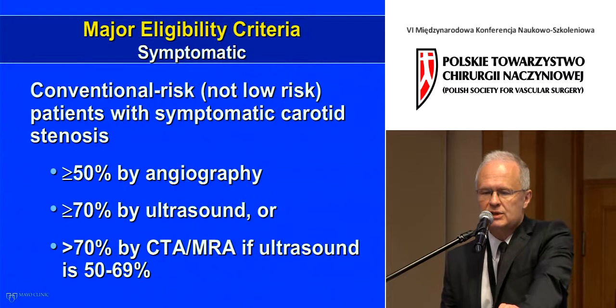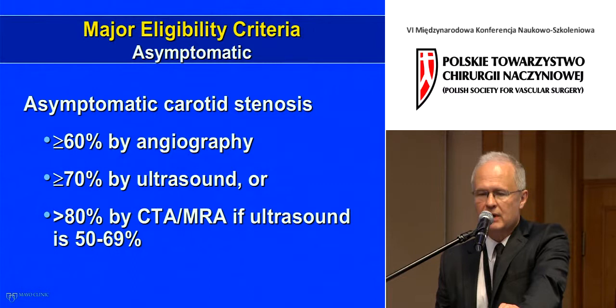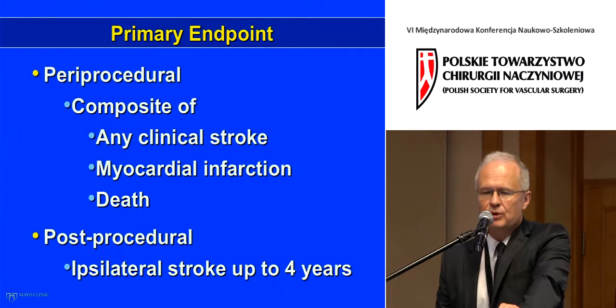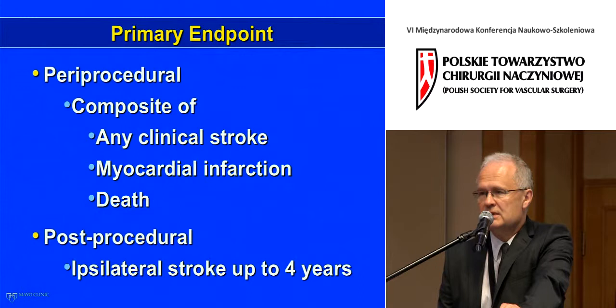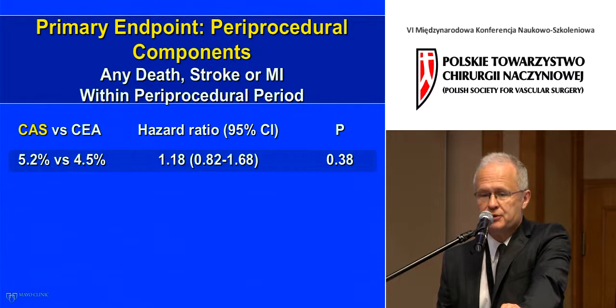Eligibility criteria were: symptomatic patients with more than 50% stenosis by angiography or more than 70% by ultrasound, or more than 70% by CT/MRA if discrepant. Asymptomatic patients required more than 60% by angiography or 70% by ultrasound, or more than 80% by CT/MRI if there was any doubt. The primary endpoint assessed periprocedural complications — the composite of any stroke, myocardial infarction, or death — followed by ipsilateral stroke over a four-year follow-up period.